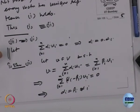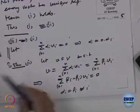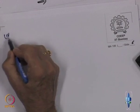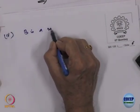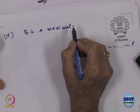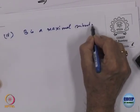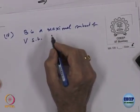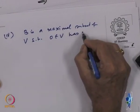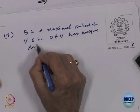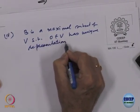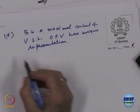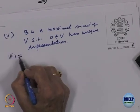Let us look at statement 4. There is a typo — it should be maximal, not minimal. Statement 4 says B is a maximal subset of V such that 0 belonging to V has a unique representation. That should be the correct statement 4. Let us prove 3 is equivalent to 4.